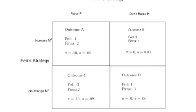In outcome C, firms increase prices but the Fed keeps money supply the same — inflation 10%, unemployment 9%. In outcome D, firms don't raise prices and the Fed leaves money supply the same — inflation 0%, unemployment 6%. Each outcome is associated with points for each player. In outcome A: Fed gets −1, firms get 2, total = 1. Outcome B: Fed gets 2, firms get 1, total = 3. Outcome C: Fed gets −2, firms get 2, total = 0. Outcome D: Fed gets 1, firms get 3, total = 4.